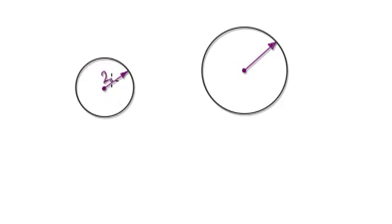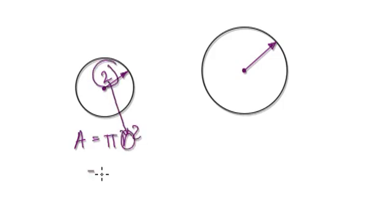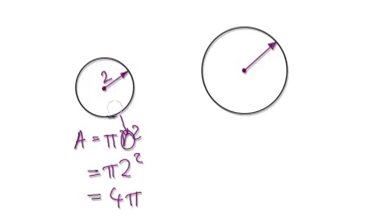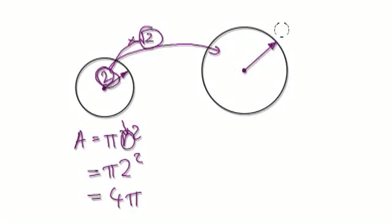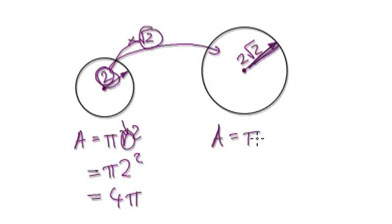Let's say currently we've got a circle of radius 2. The area of this circle is A = pi r squared. Putting 2 in gives us an area of 4 pi. Now, we've already established that if you multiply the radius by the square root of 2, it gives twice the area. So the new radius will be 2 times the square root of 2, which we write as 2 root 2. That's our new radius. Let's work out the area of this new circle: A = pi r squared.